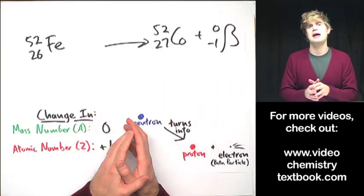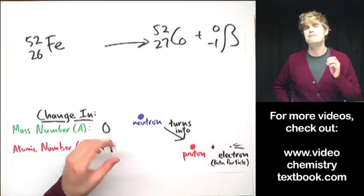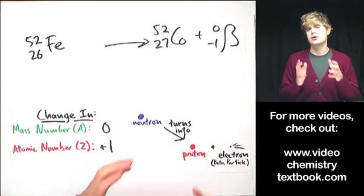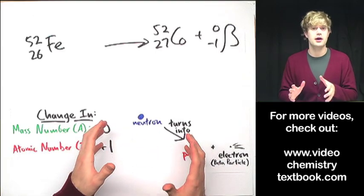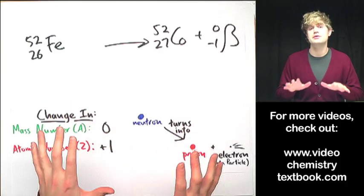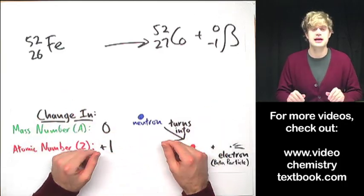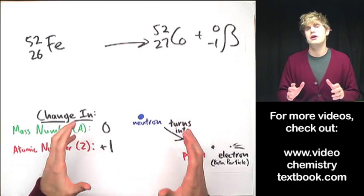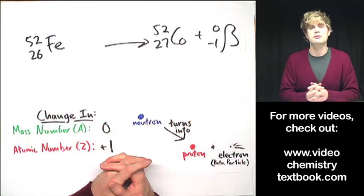Now this was beta decay. Sometimes people call it beta minus decay. Beta decay has a closely related cousin called positron decay, which is sometimes referred to as beta plus decay. So if you feel good about this beta minus decay stuff, you'll probably want to check out the video on positron decay to keep going.